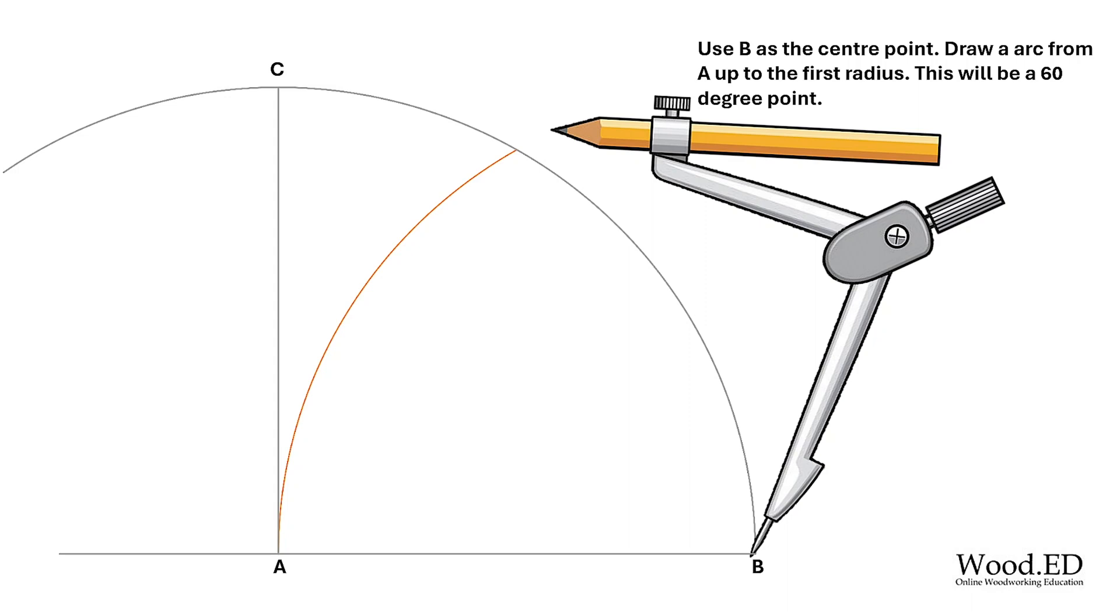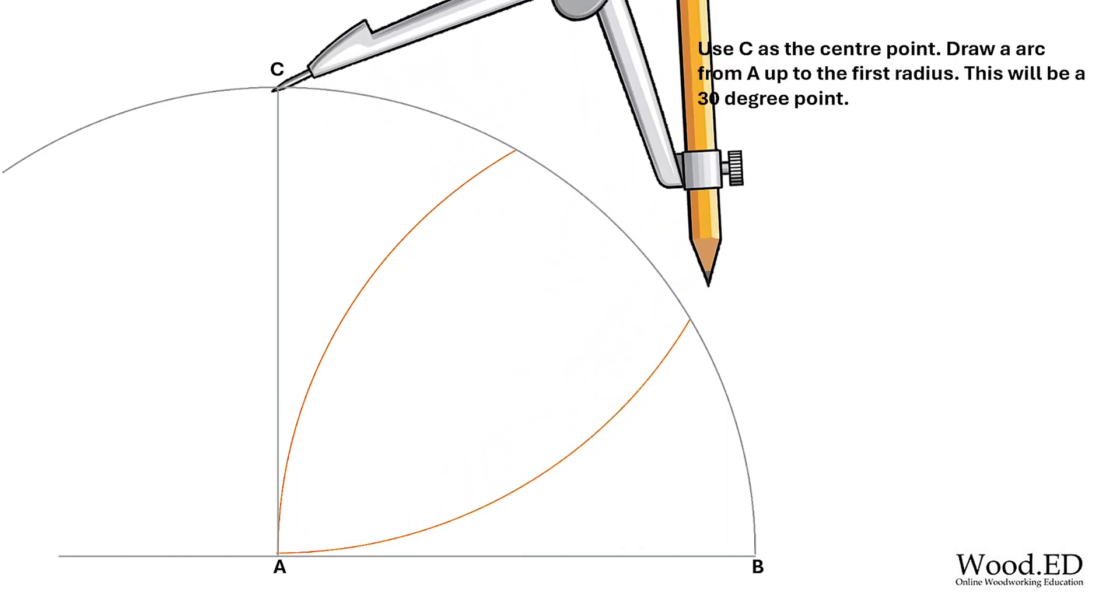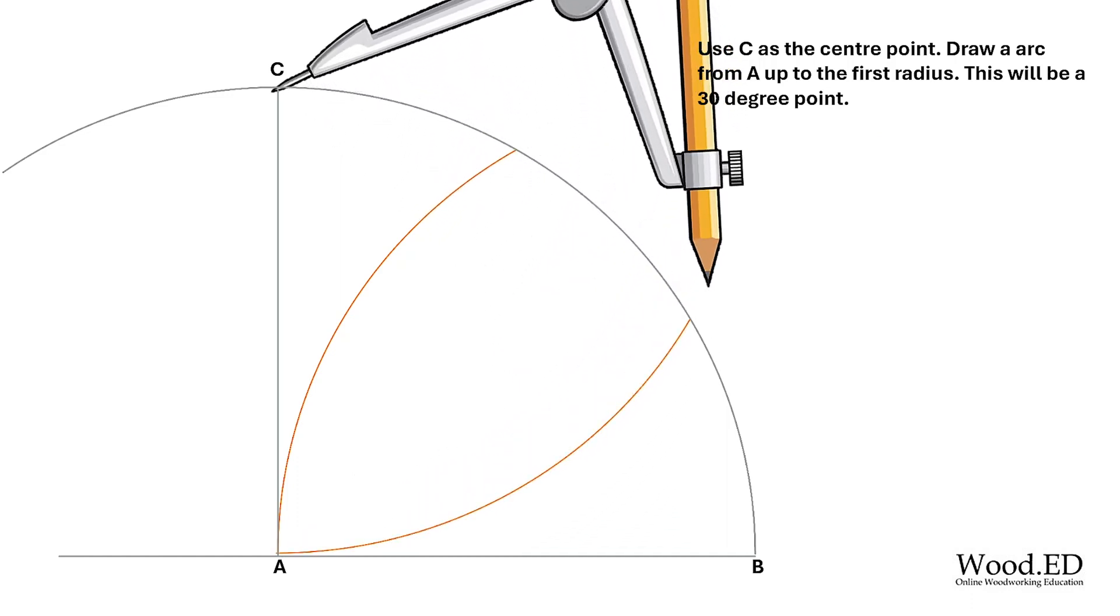Keeping the compass at the same radius, we're going to put the point on C and arc another line and that's now our 30 degree angle point. Wherever you split a radius line, if you keep the compass to the same point, that will always give you three equal splits across that radius. So we've now got our 30 degree and our 60 degree points.